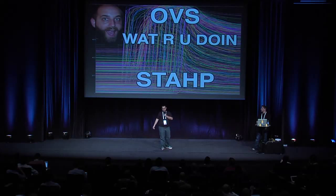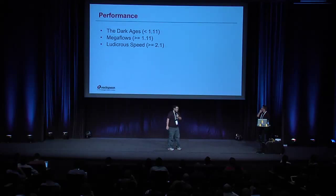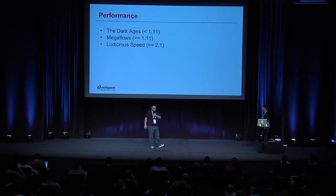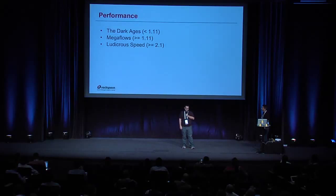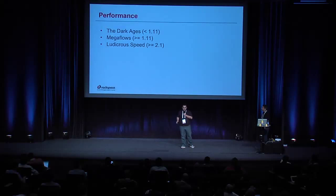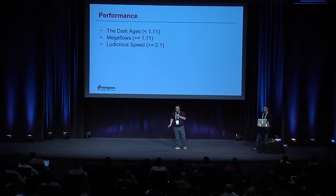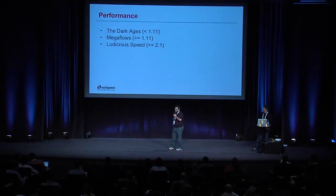Around performance, there are three eras we've experienced. Pre-1.11 — I'll call it the dark ages — it's really rough. You don't get good performance on a lot of workloads. Then megaflows. Then what I'll call ludicrous speed. I'll get into each one.